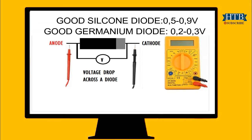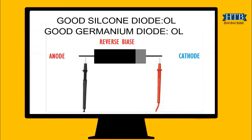A multimeter's diode test mode produces a small voltage between test leads. The multimeter then displays the voltage drop when the test leads are connected across a diode. When forward biased, a good diode displays a voltage drop ranging from 0.5 to 0.8 volts for the most commonly used silicon diodes. Some germanium diodes have a voltage drop ranging from 0.2 to 0.3 volts.